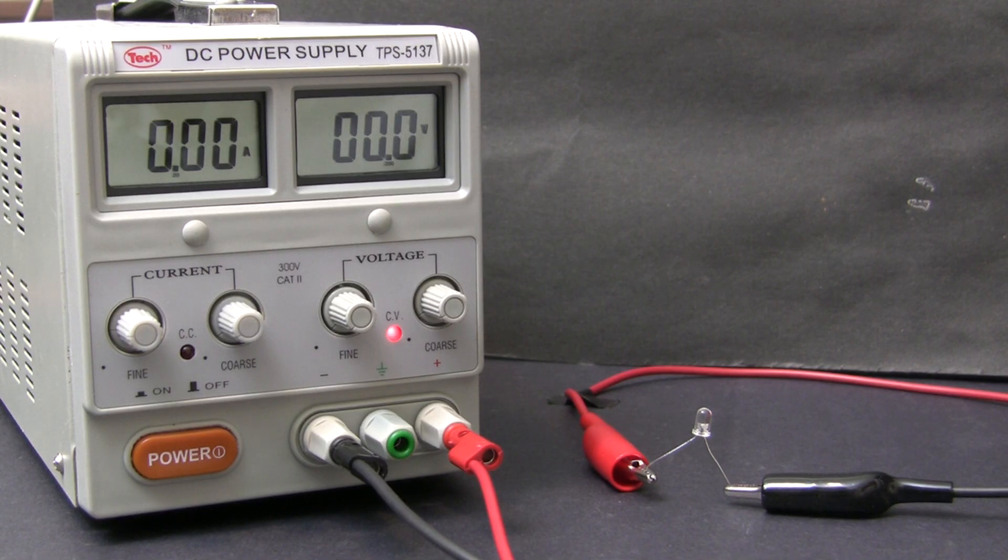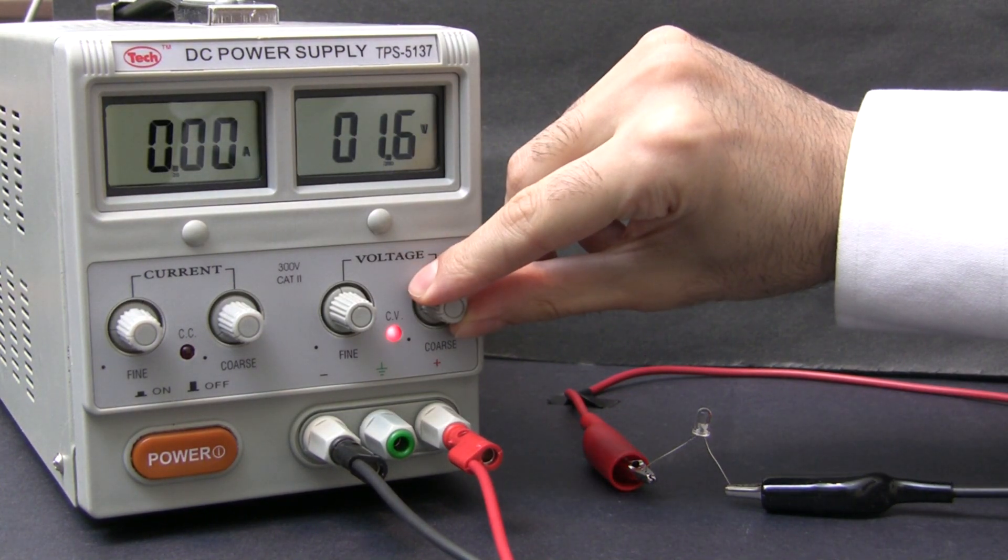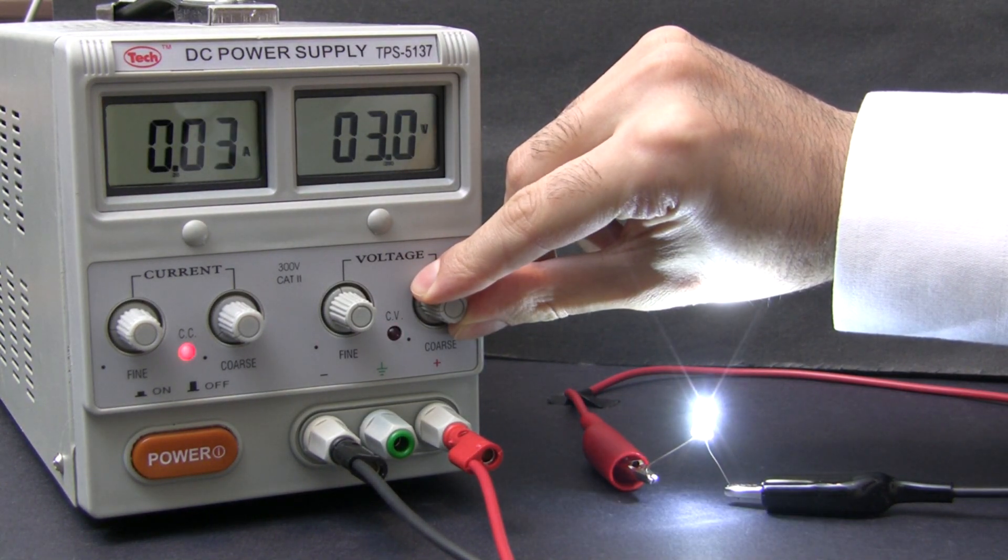With the supply set to 0 volts, the LED stays off. With the supply set to 1.5 volts, it's still not enough to turn the LED on. But as we get closer to 3 volts, the LED reaches full brightness.